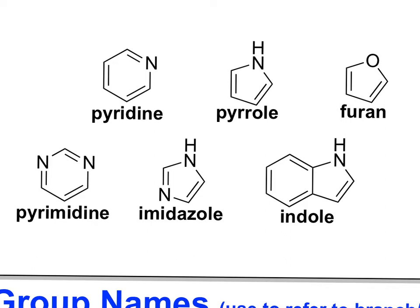Some of these structures are very biologically relevant. For example, the building blocks of DNA are derived from pyrimidine. A variety of other biological molecules, such as the amino acid tryptophan, are constructed from these types of compounds as well — the indole group is one of the substituents found within tryptophan. The indole molecule itself is also interesting because it has a dark blue color and was originally used as a dye, which is why it's referred to as indole.